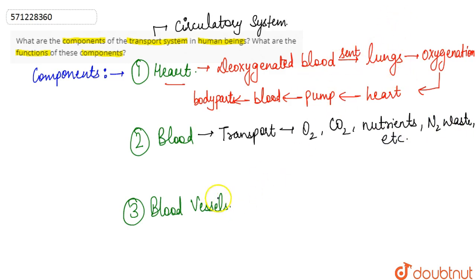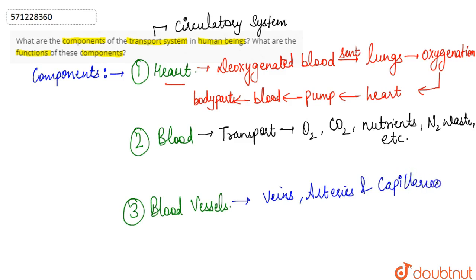This blood is transported via blood vessels, which are basically veins, arteries, and capillaries. These three help in circulating the blood, carrying various substances from one body part to another. So these are the components of the circulatory system in human beings and their functions.